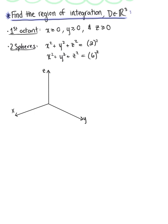We've drawn only the first octant, since that is one of our restrictions. Looking at our two spheres, the first sphere has a radius of 2, so ρ = 2. Drawing this region of the sphere in the first octant — here is this one-eighth of our sphere — we know it has a radius of 2 units. Our second sphere has a radius of 6, so ρ = 6.